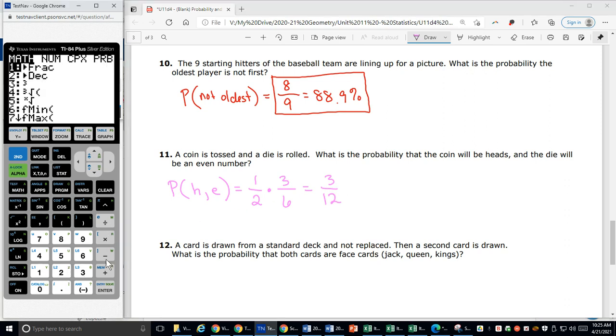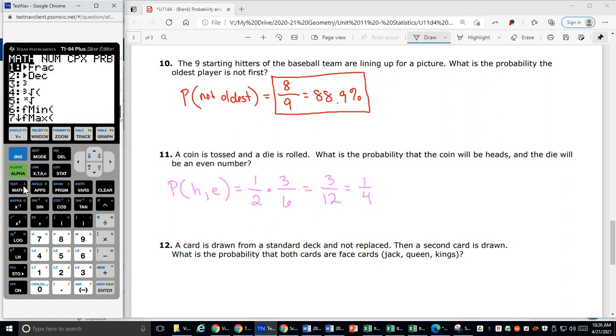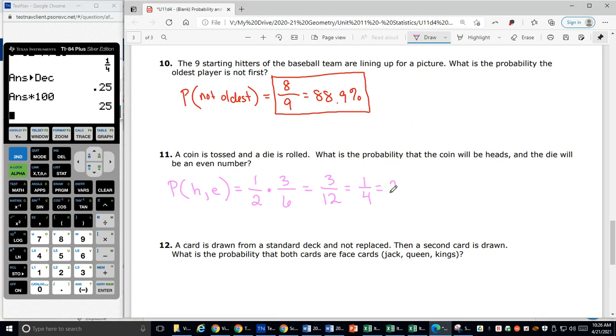Which if I make that a simplified fraction, I get one fourth, which should be 25% of the time. Make that a decimal, multiply it by 100, 25% of the time, right? Because one quarter, 25 cents. One fourth is my probability that I will land heads up and roll an even number, which should happen one fourth of the time.